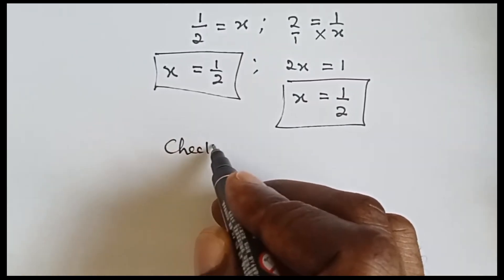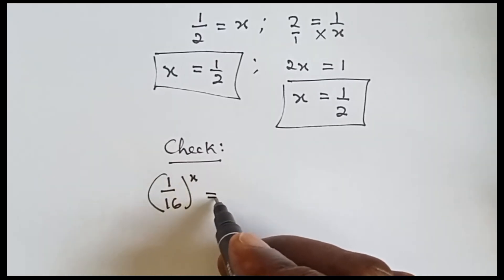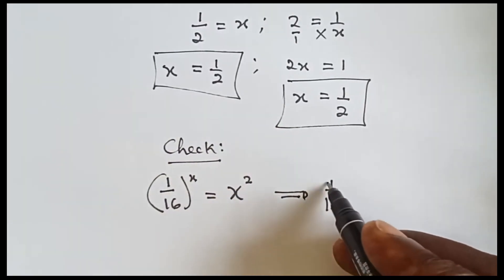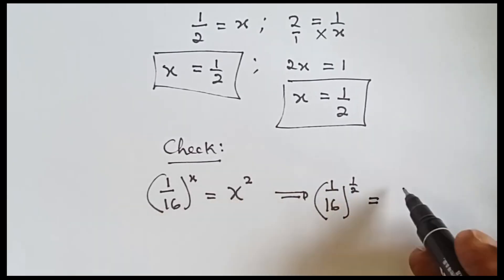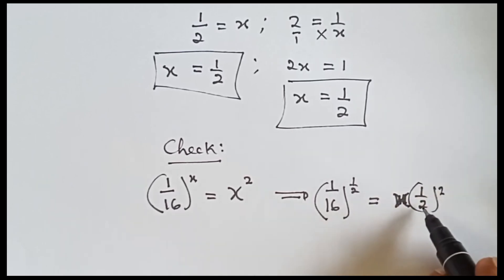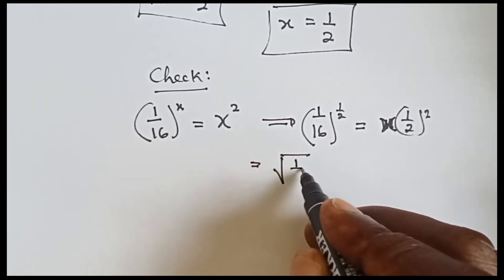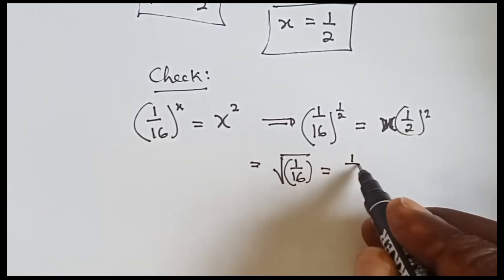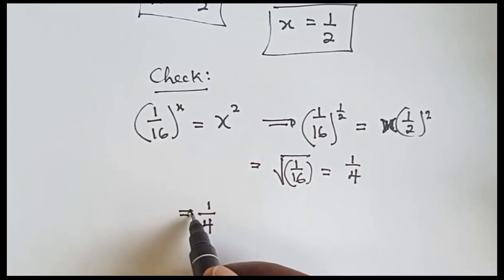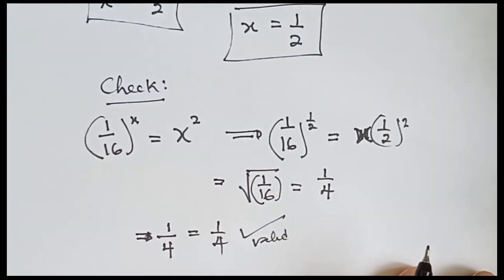Now let's quickly check if our answer is correct. We have 1 over 16 raised to power x equals x squared. Our x is 1 over 2, so we have 1 over 16 raised to power 1 over 2, which means the square root of 1 over 16. The square root of 1 is 1, the square root of 16 is 4, giving 1 over 4 equals 1 over 4. Our answer is valid.